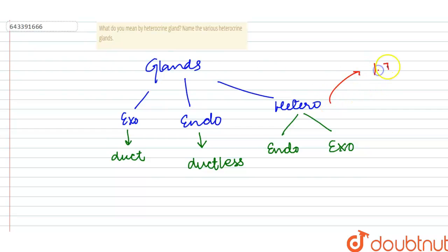The first one is the testes, the second one is the ovary, and the third one is the pancreas.